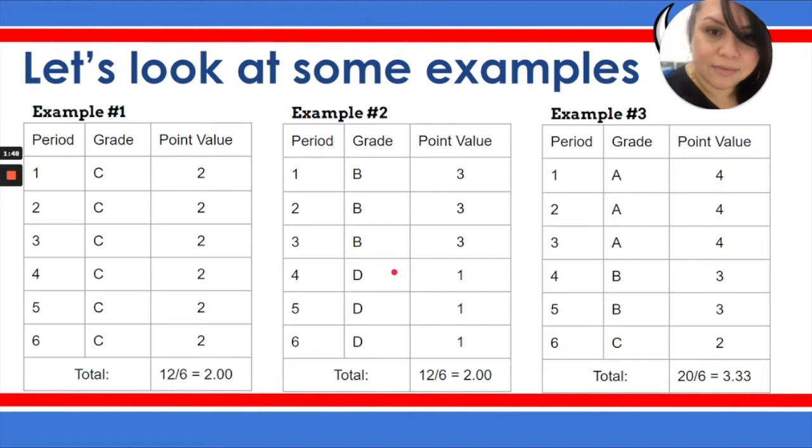Example number two is very similar. This student on average has a 2.0 because they earned C, D, and B grades. Example number three shows you a student who is doing solid work earning mostly A's and B's and having a 3.3 GPA.